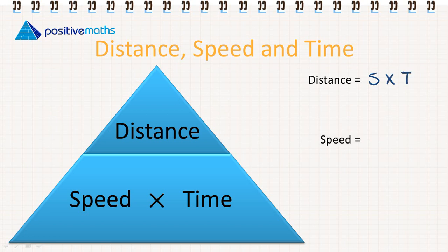We'll do the same for speed. We cover speed, and it tells us speed is equal to distance divided by time. And then to find time, it's going to be equal to distance divided by speed. Some people call this Dad's Silly Triangle. If you use this, it'll just help you to remember what order you're putting the letters down in. So distance at the top, speed by time at the bottom.